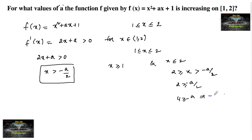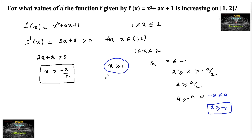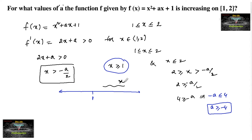So we can write -a ≤ 4, or a ≥ -4. Now from x ≥ 1 and x > -a/2 and x ≥ 1, we consider two cases for the position of -a/2 relative to 1 on the number line.